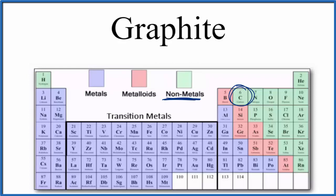If we looked at graphite, the structure of graphite, we'd see that it's called a giant covalent structure. Let's look at that.